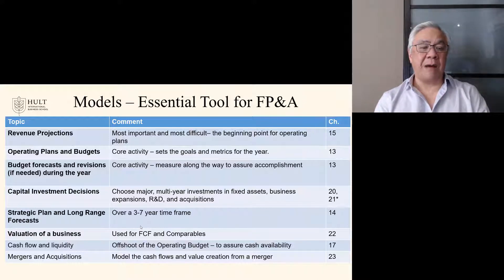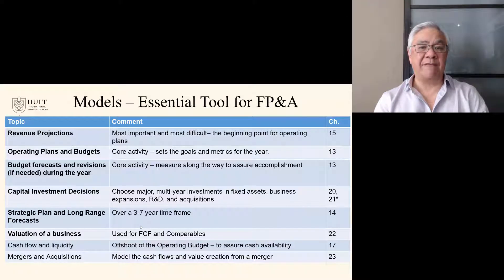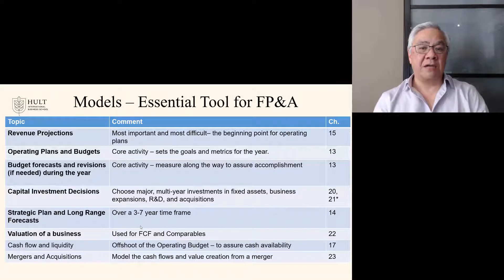The second group would be operating plans and budgets. These would include the revenues, of course, but go through all the other cost items. The key outputs of the operating budgets are a cash budget to make sure that we have adequate cash to make it through the seasonality and natural ups and downs of cash flow during the year, and also to generate the standard financial statements for use in our planning process and as input into our accounting systems.